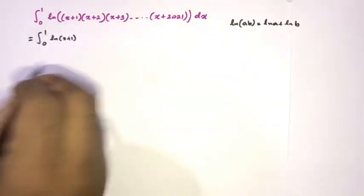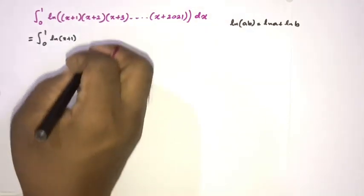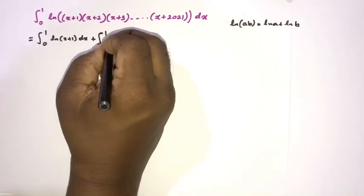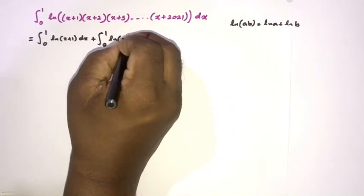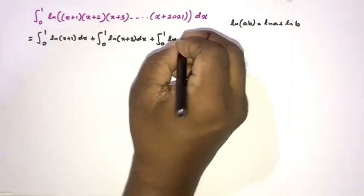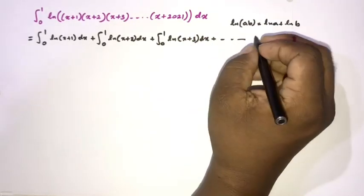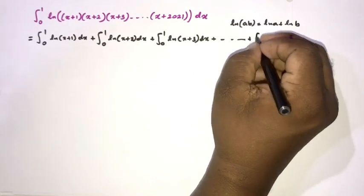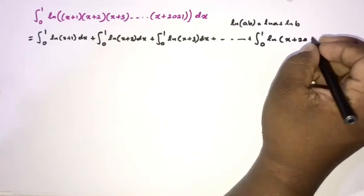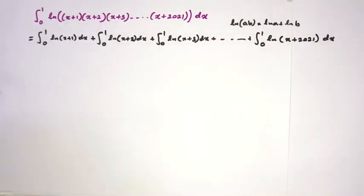We break the integral into: integral from 0 to 1 of ln(x+1) dx, plus integral from 0 to 1 of ln(x+2) dx, then integral from 0 to 1 of ln(x+3) dx, and so on up to the last term, integral from 0 to 1 of ln(x+21) dx.